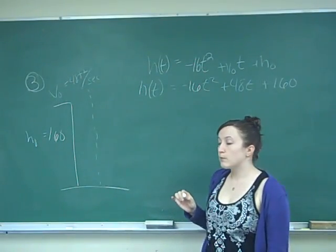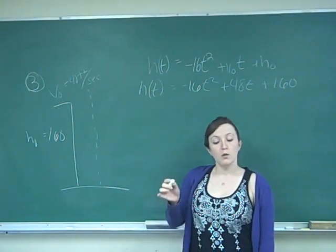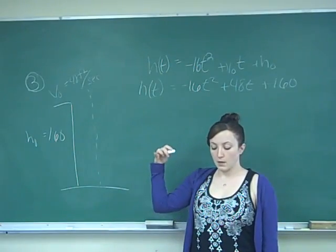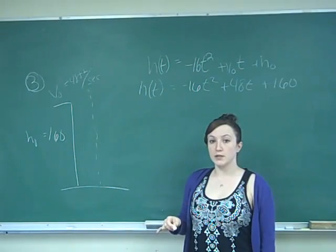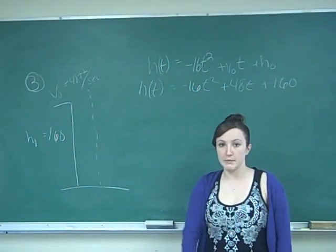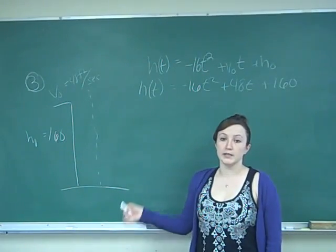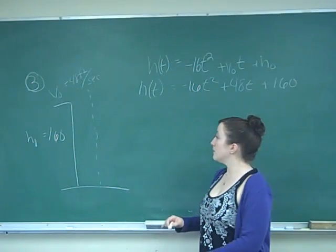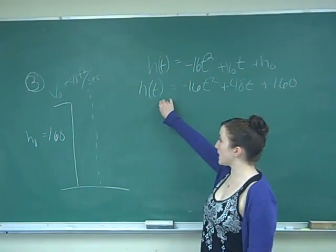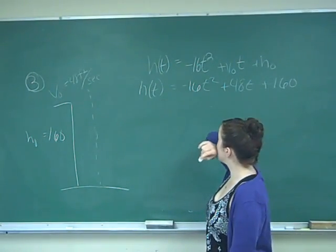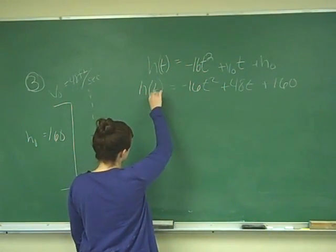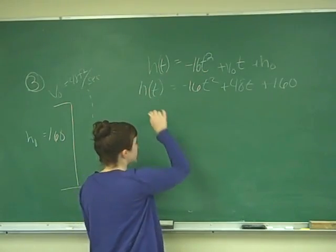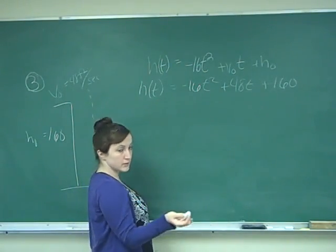So it says we want to know what the velocity is when the calculus book hits the ground. So we first need to know at what time that happens. Then we can plug it in to find the velocity. So at what time it happens is dependent on h of t. So we know when h of t is zero, then our calculus book has hit the ground.